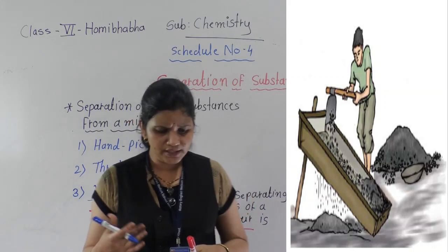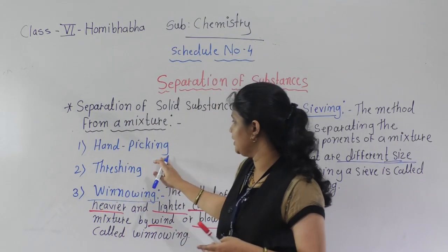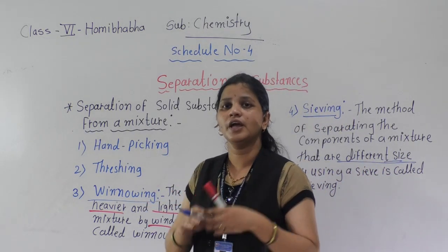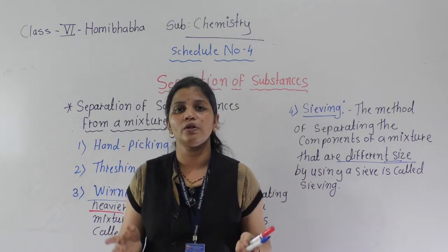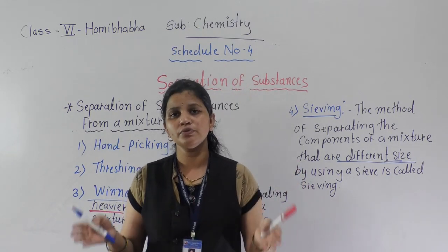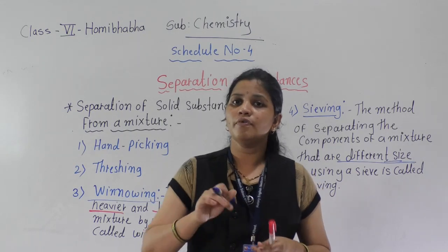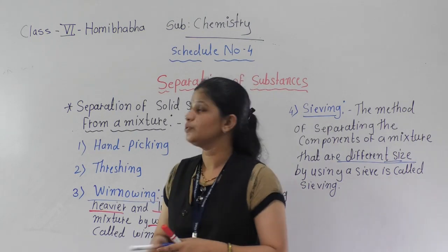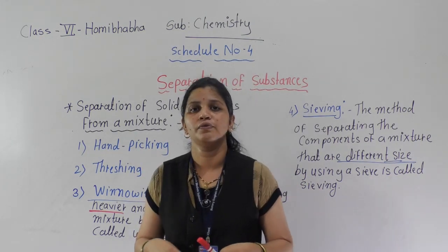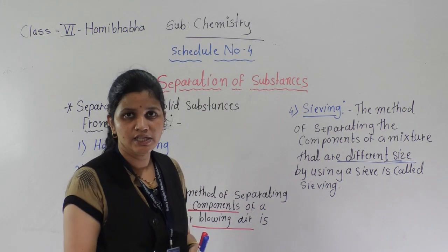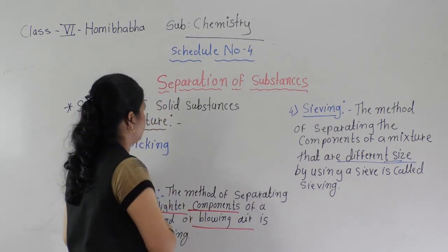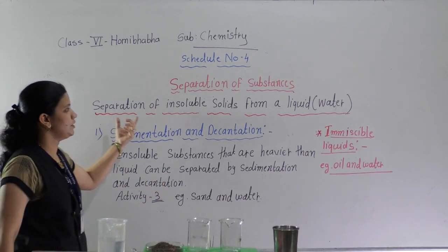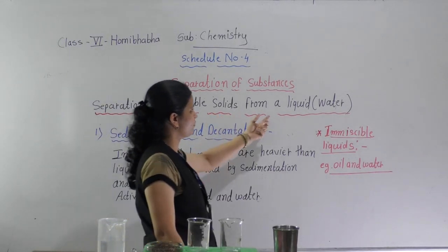So these four methods — hand picking, threshing, winnowing, and sieving — are simple methods we use to separate solid substances. If two solids are mixed together and we want to separate them, these four methods are useful. Now we will discuss the next point: the separation of insoluble solids from a liquid.